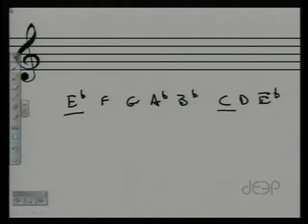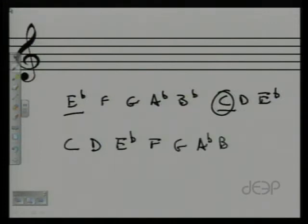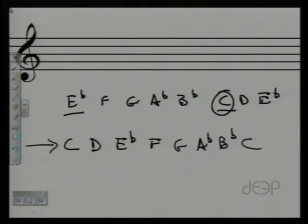So if you needed to write that relative minor to E flat, it would just be the same letter names starting on C: C, D, E flat, F, G, A flat, B flat, C. So this is the relative minor to the major scale E flat.